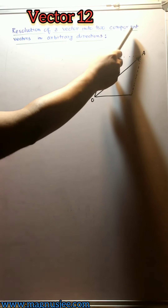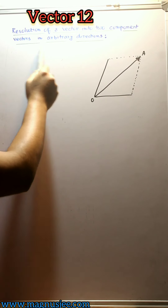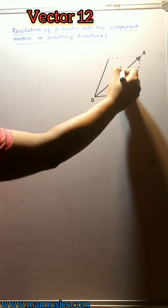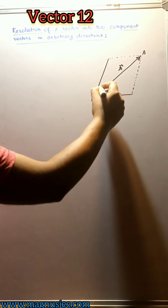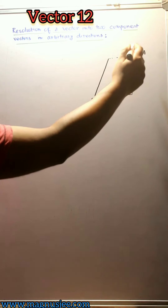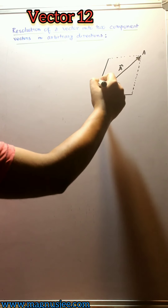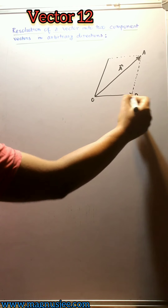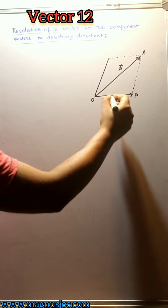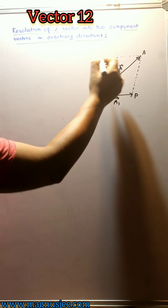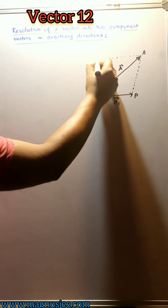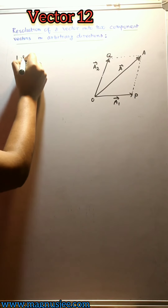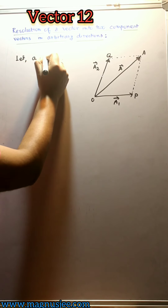Resolution of a vector into two component vectors in arbitrary directions. Let vector a act along OA, represented by the straight line OA in magnitude and direction. In the OP direction, a1 is a component vector, and vector a is also resolved into another component vector a2 along OQ.